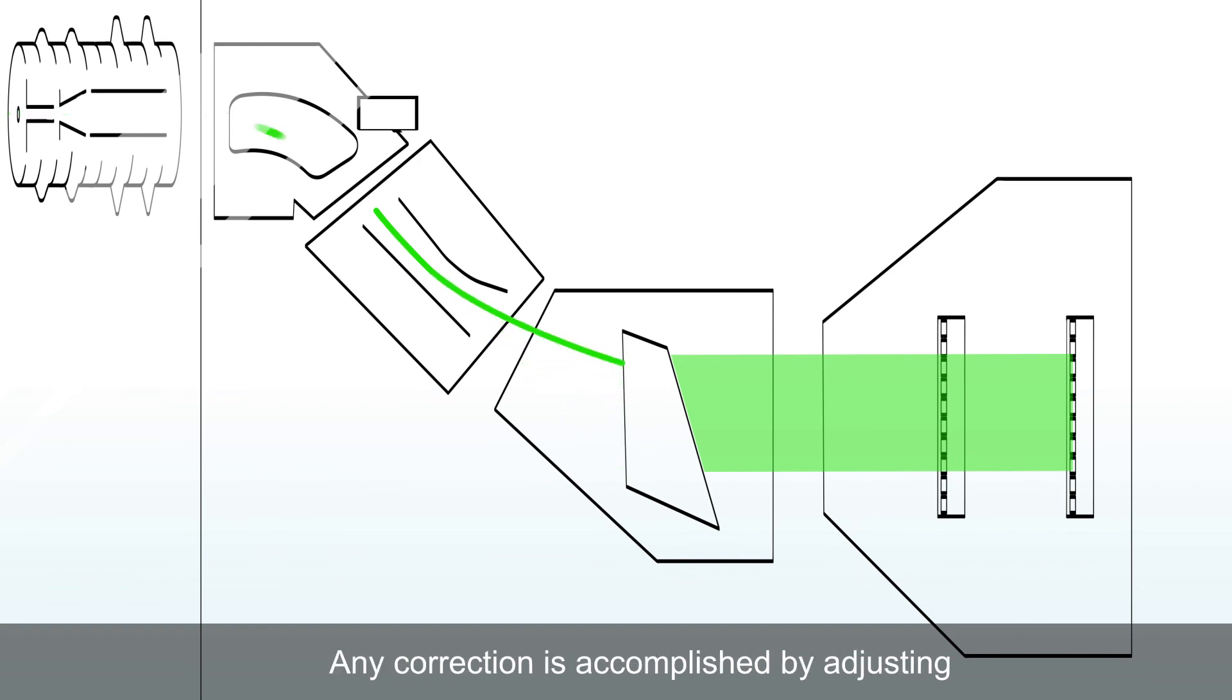Any correction is accomplished by adjusting various parameters of the source and extraction assemblies. The preferred multi-cup Faraday system compares the beam conditions before and after the target position to optimize beam condition.